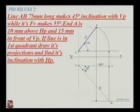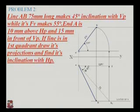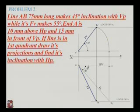Extend the point downward to the locus of B1. Denote the intersection point as B. Extend the line from A to B — this will be the projection of the top view. The projection of B-dash is the locus of B1, and the projection of B1 is the locus of B.